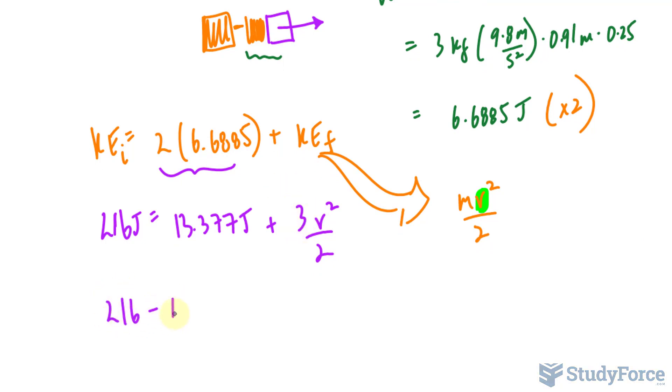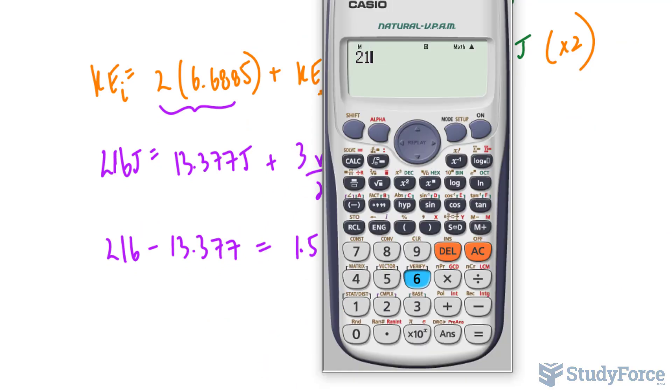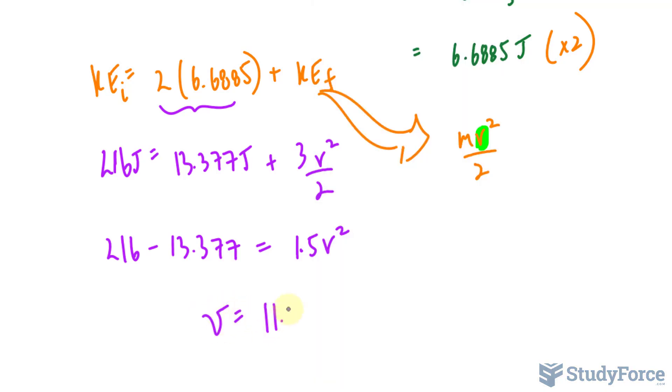So I have 216 minus 13.377 is equal to 1.5 v squared. 1.5 because 3 divided by 2 is 1.5. 216 minus 13.377, and then we divide both sides by 1.5. We get 135, and then we square root both sides, where we get a velocity of 11.6 meters per second.